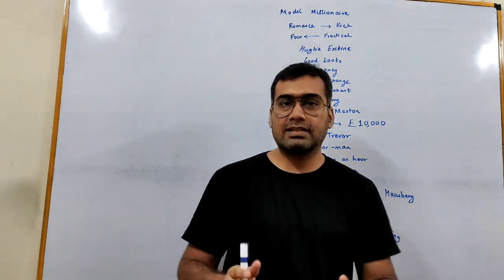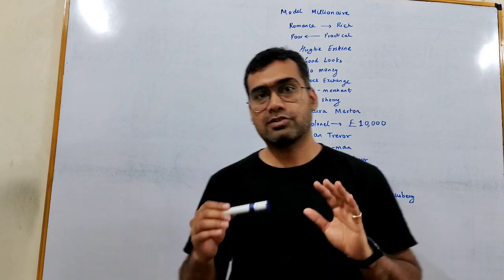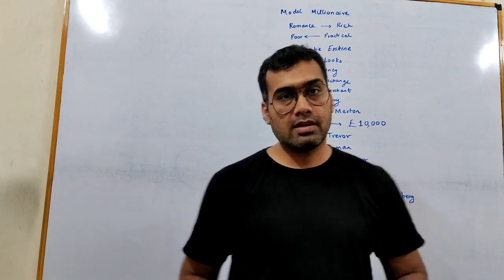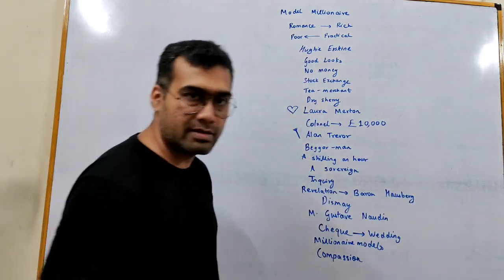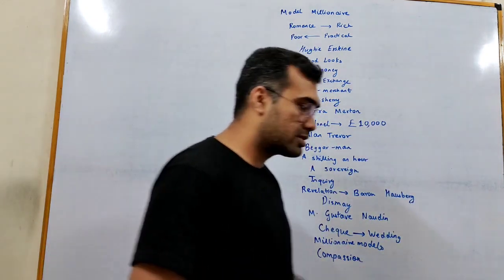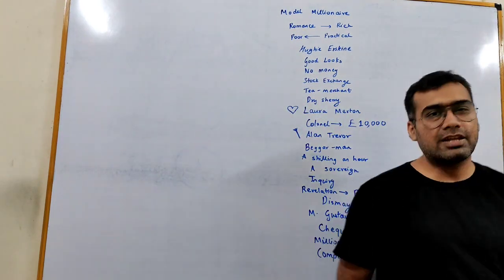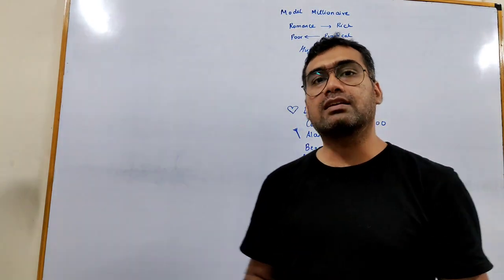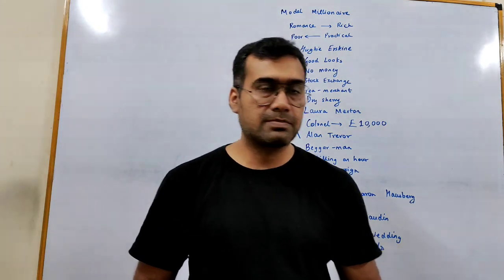Hi students, let's study 9th Standard ICSE English Literature Story 3, 'Model Millionaire' by Oscar Wilde. It's an interesting story with a twist in the tale which reminds me of O. Henry.